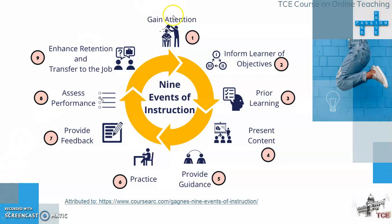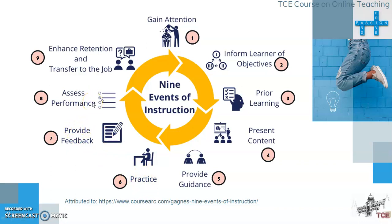This is a visual representation of what we have seen. The first step is gaining the attention of the learner, then informing learners of objectives — what we are going to learn. Then we address prior learning with a summary session, followed by the lecture. Then provide suitable guidance, give practice questions in an iterative manner, provide feedback for every practice question, give graded assessments to evaluate learning, and finally reach the ninth step — the task to enhance retention and transfer to their own work.